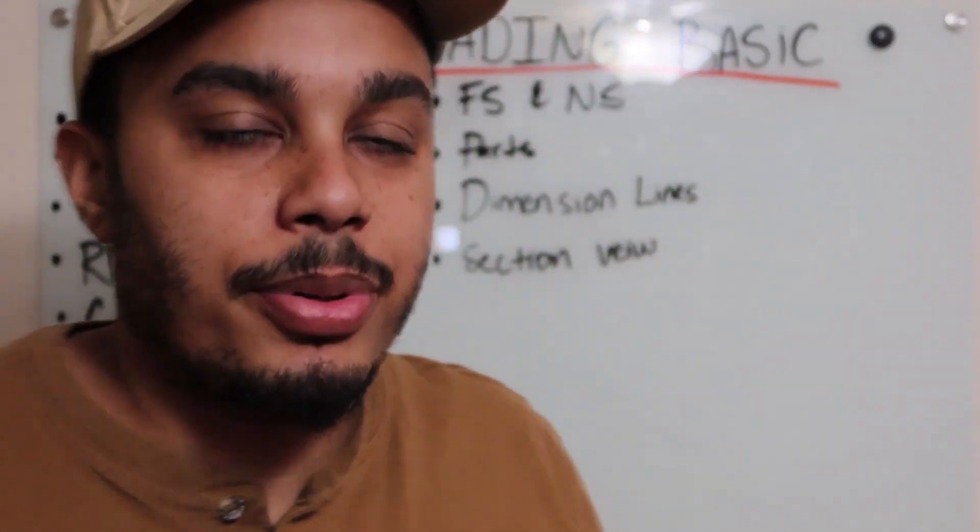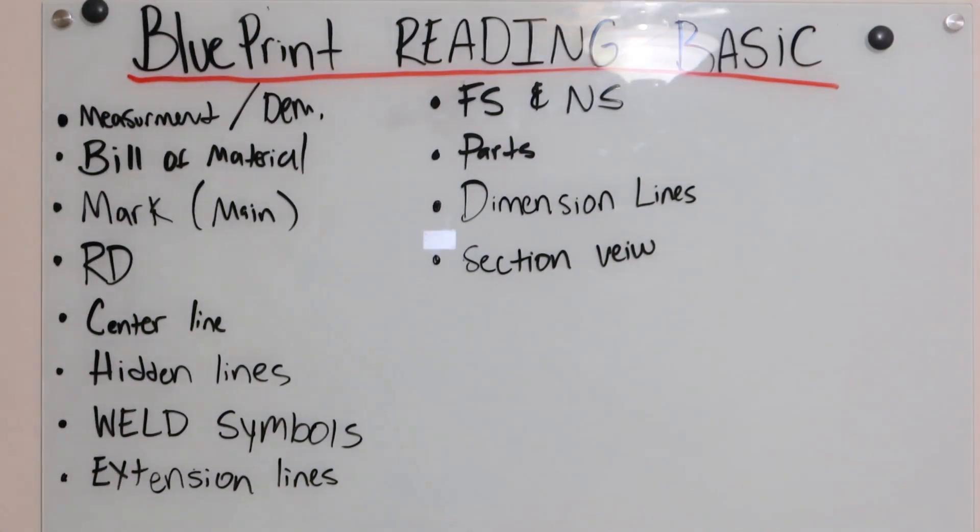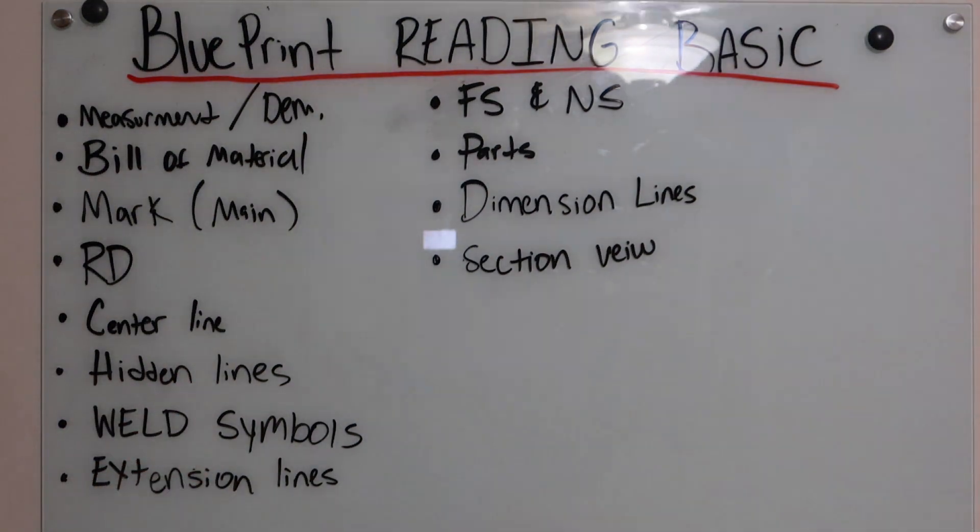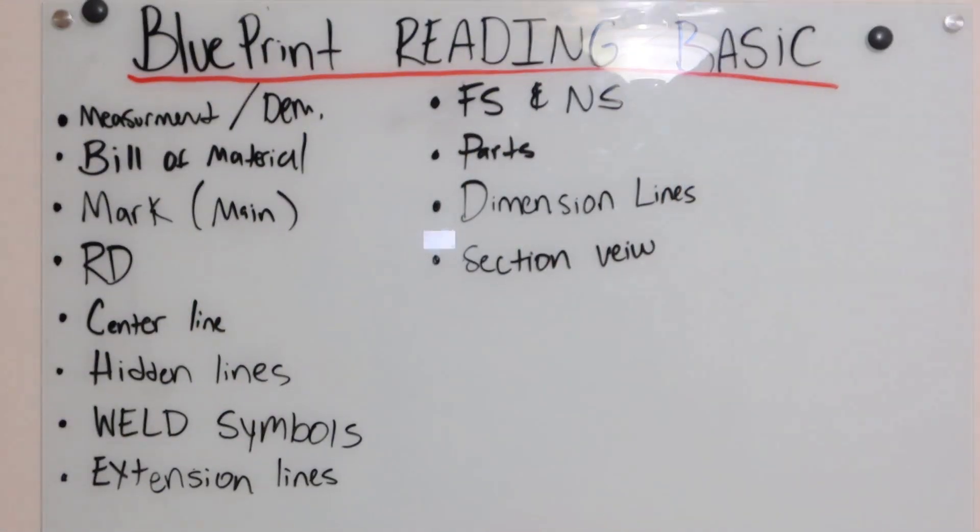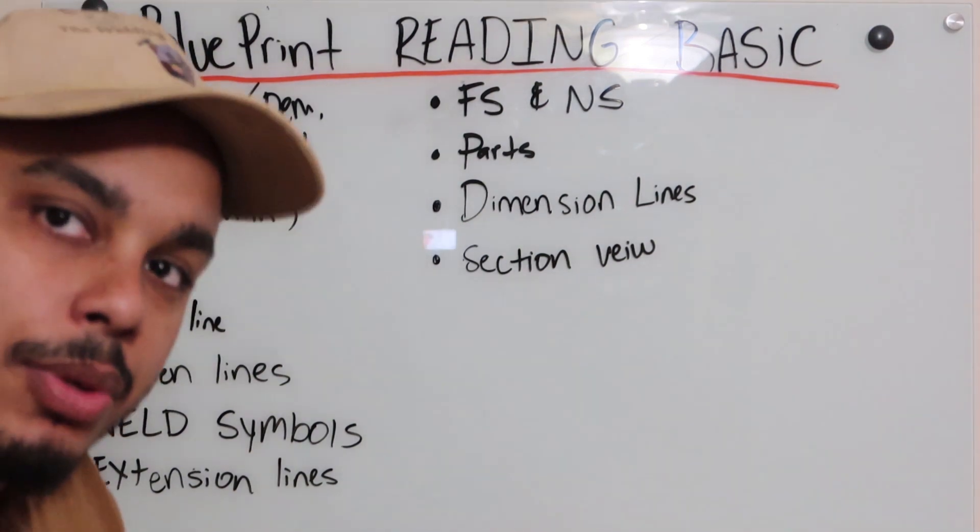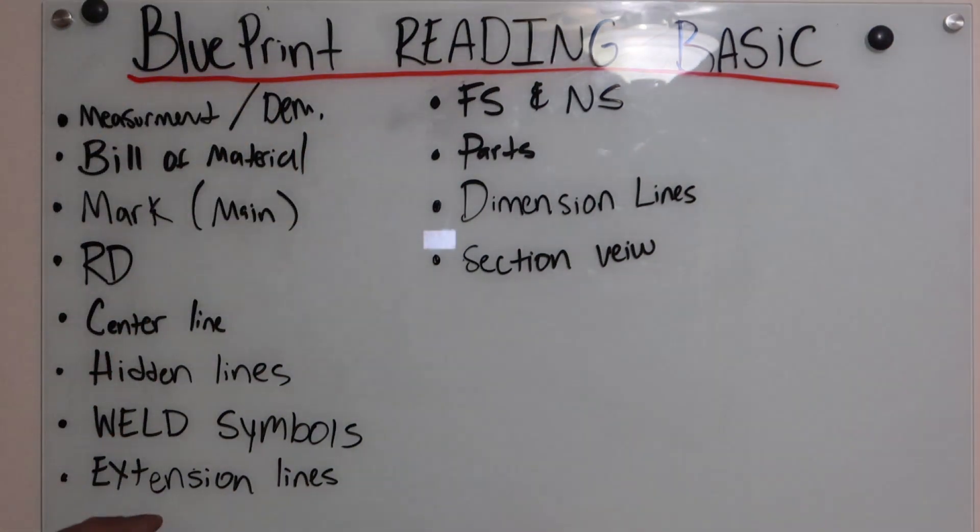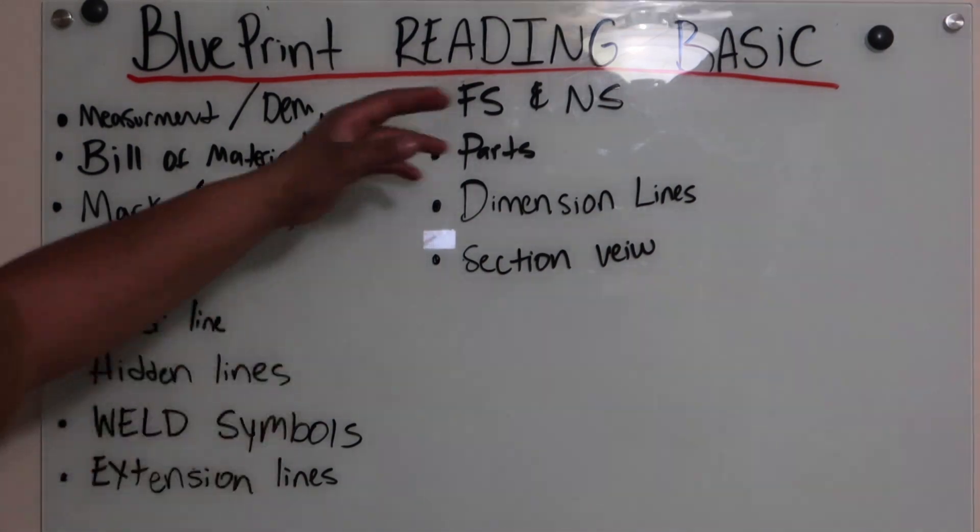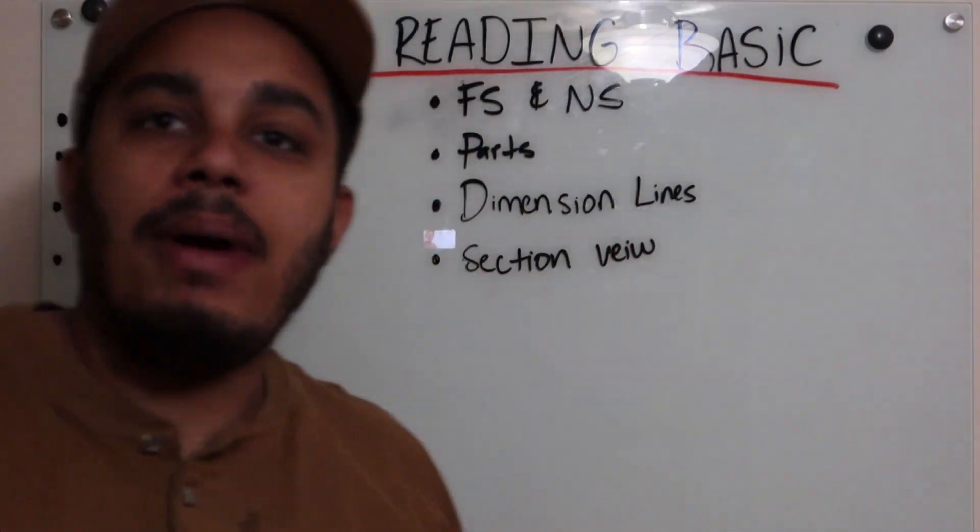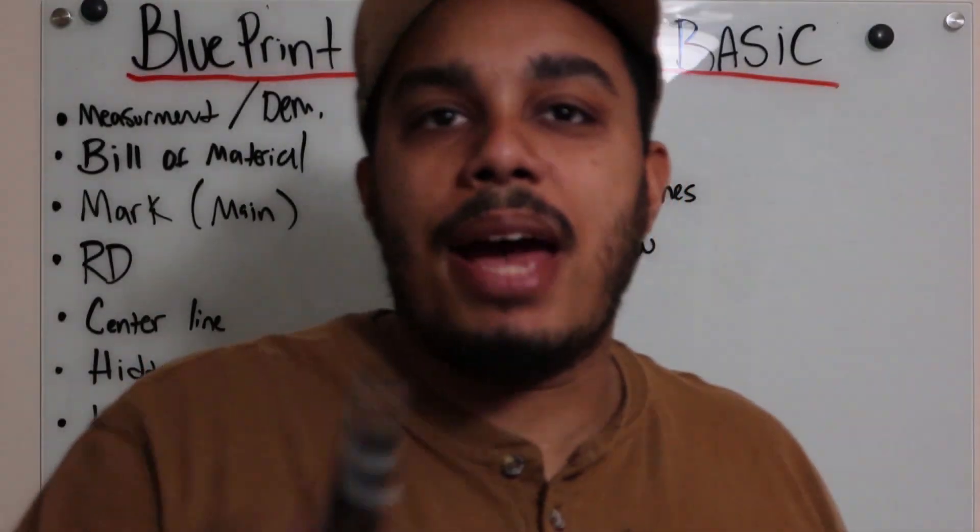Dimensions is something you see on your print as well. You got centerline, centerlines is on prints. Hidden lines, weld symbols in some cases if it's welding, but with machining you don't have weld symbols. And or if it's like construction blueprints with wood, extension lines. You got FS and NF. If anybody in the comments down below that ever fabricated in a shop can tell me what that is down below.